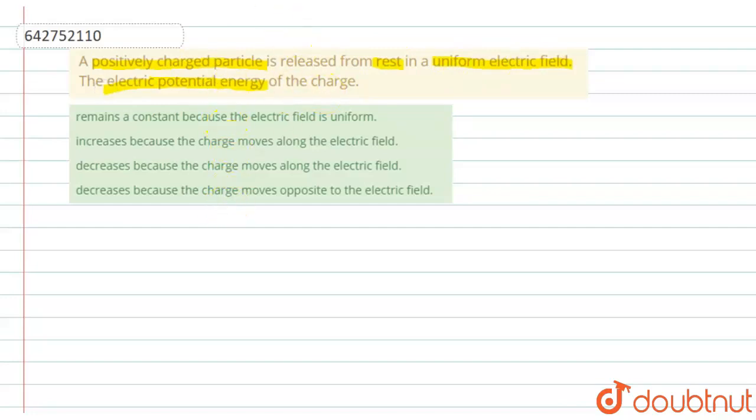So let us consider a uniform electric field. When a charged particle is released in a uniform electric field, the charge will experience force along the direction of the electric field.